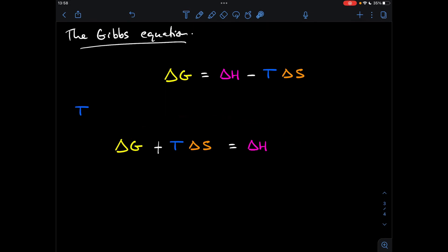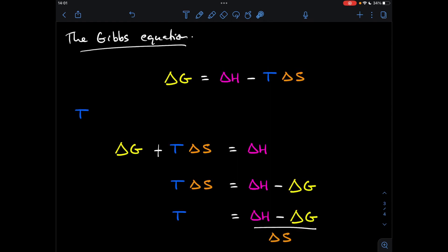So the next thing I'm going to do is I'm going to take this delta G over to this side, and it's going to become minus delta G. So all I need to do now is get the delta S out of the way from T. So look at what they're doing at the moment. They're multiplying each other, so I need to take it onto this side. It's going to go on the bottom, and we're going to divide all of this by that delta S.